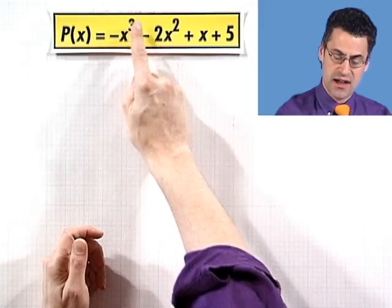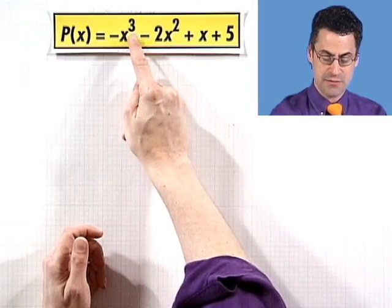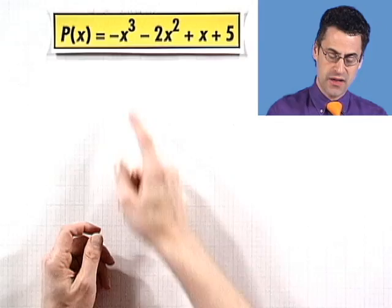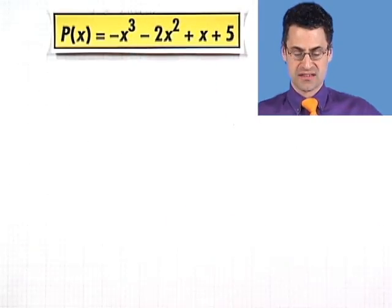But if you want to forego the accuracy and get a rough feel as to what this might look like, all you've got to do is look at what's going on with the highest power. We look at the degree of the polynomial, defined to be the highest power on all the x's.